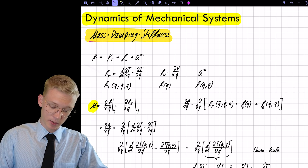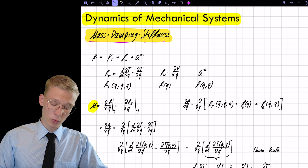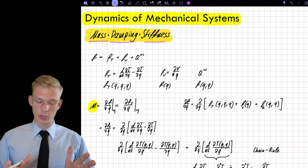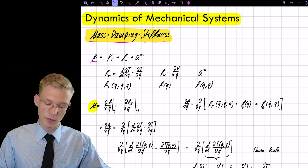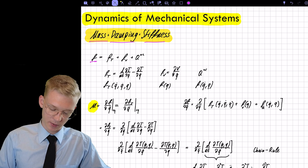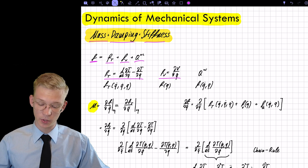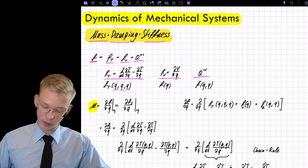In the last videos we only got the formula for getting the mass, damping, and stiffness matrix. Now we want to look at which parts are actually in those matrices, because the equations of motion are made up of a part coming from the kinetic energy, the potential energy, and the non-conservative forces. The kinetic energy is dependent on q-double-dot, q-dot, and q; the potential energy only on q; and the non-conservative forces on q-dot and q.